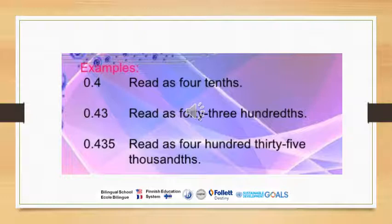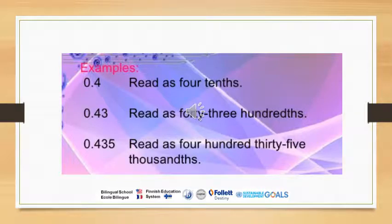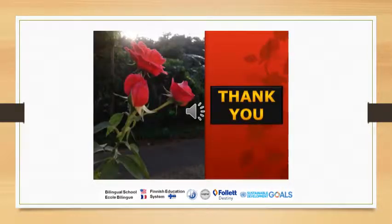In general, when you read any decimal number, you read all the digits after the decimal point and then say tenths if you have one decimal place, hundredths if you have two decimal places, or thousandths when you have three decimal places. Thanks for watching and see you in the next video, goodbye.